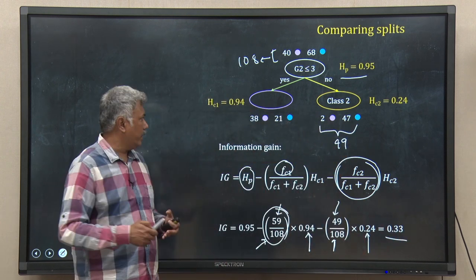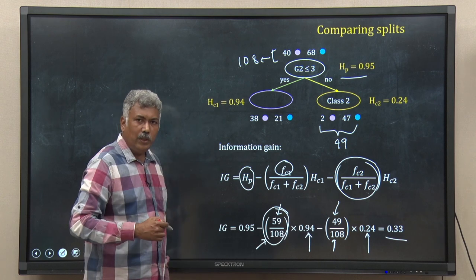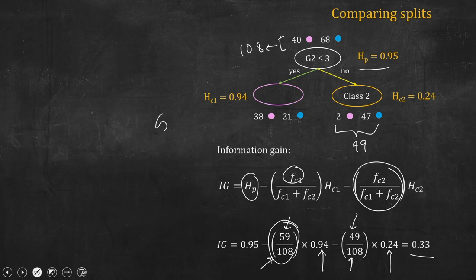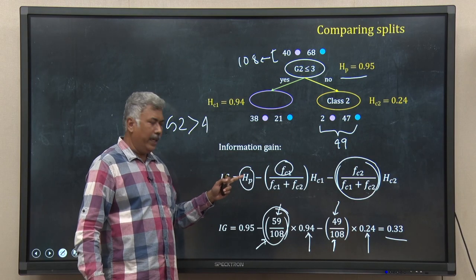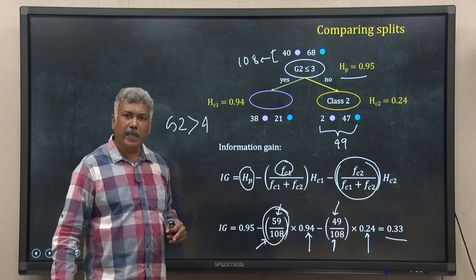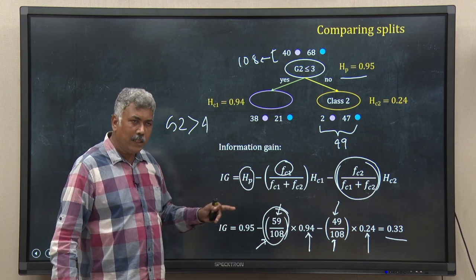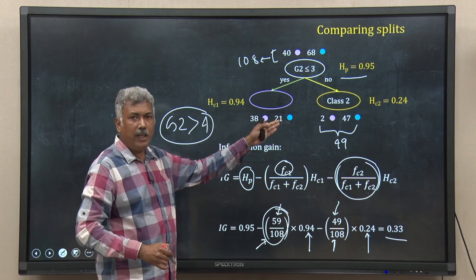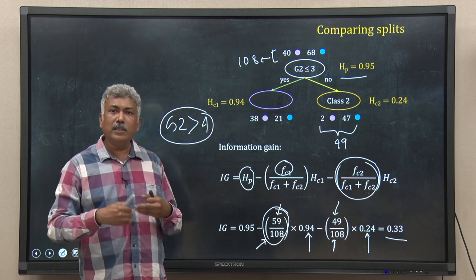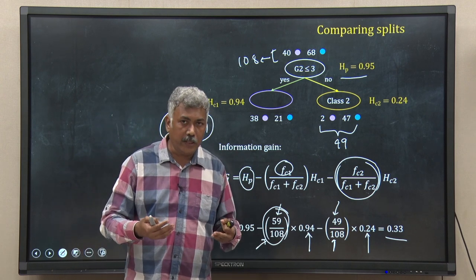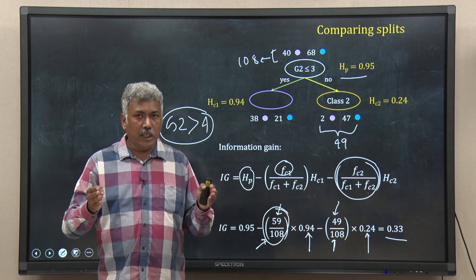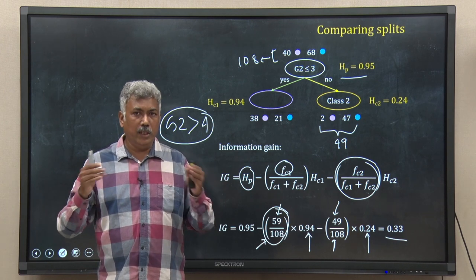Now suppose you ask an alternate question — say G2 > 4 — instead of G2 ≤ 3. You do the same calculation and check the information gain. If the information gain for this alternate question is less than 0.33, I keep the previous question, because it gave better segregation of the heterogeneous population into more homogeneous subpopulations.